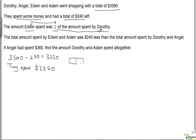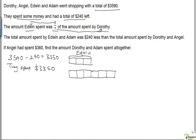So here we have 3 units for Edwin, and 7 units for Dorothy — one, two, three, four, five, six, seven units to Dorothy.